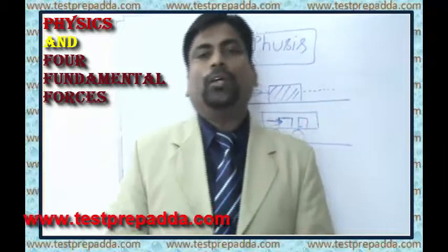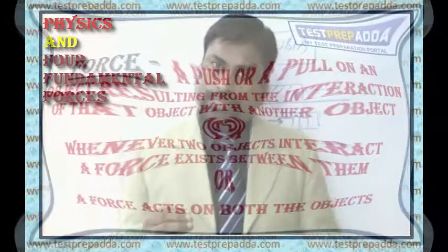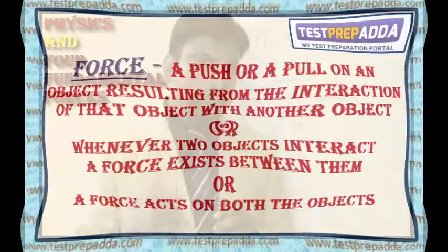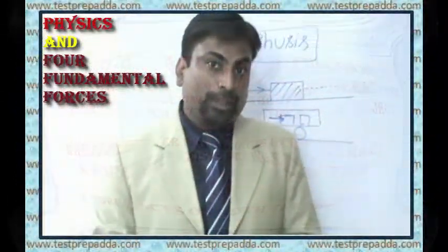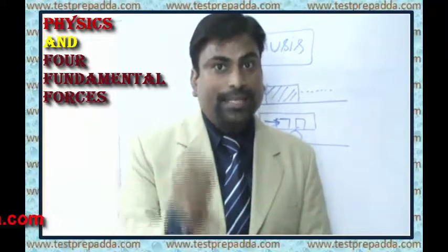The correct idea of force was given by Newton in his famous law of motion. Force is actually a push or a pull on an object resulting from the interaction of that object with another object. Or we say, whenever two objects interact, a force exists between them or a force acts on both the objects. So this way we define a force. On a lighter note, I may say there is a force of attraction between you and your mother. And please note, force changes the state of motion of the object.